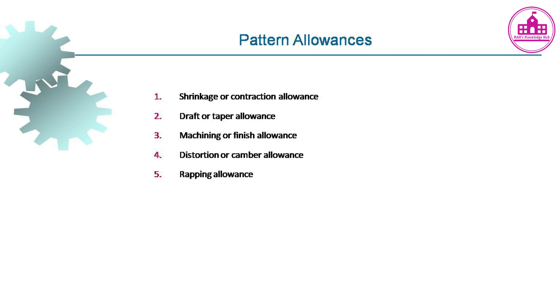The main types of pattern allowances are: shrinkage or contraction allowance, draft or taper allowance, machining or finish allowance, distortion or camber allowance, and wrapping allowance.